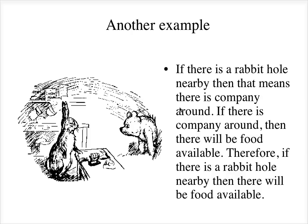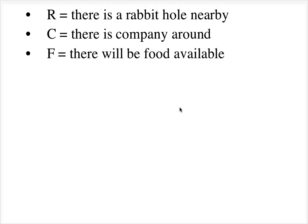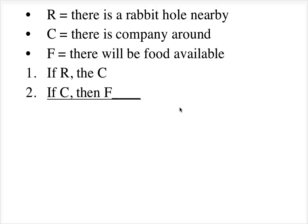Here's another example. If there is a rabbit hole nearby, then there is company around. If there is company around, then there will be food available. Therefore, if there is a rabbit hole nearby, then there will be food available. Let R stand for 'there is a rabbit hole nearby,' C stand for 'there is company around,' and F stand for 'there will be food available.'